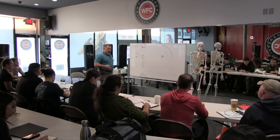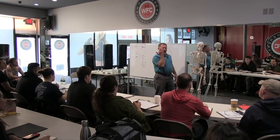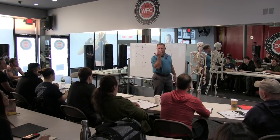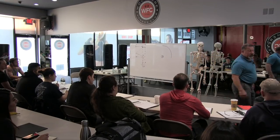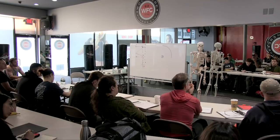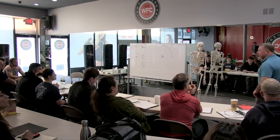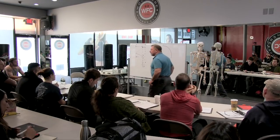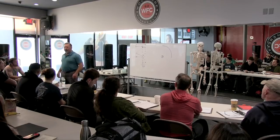If my bicep goes from here to here, how much has it changed its length? About a quarter of its own length — that's about all it can do. If we can only get a shortening effect out of 25% of the contractile length of a muscle belly, how in the hell do we sprint?